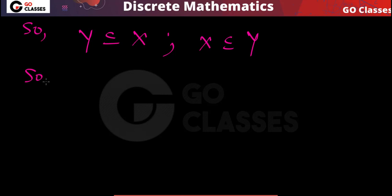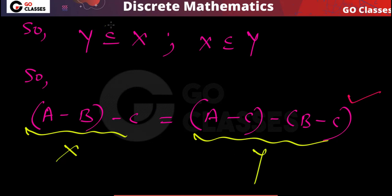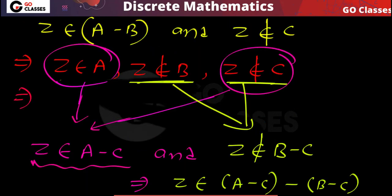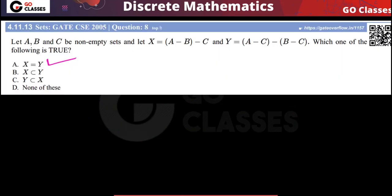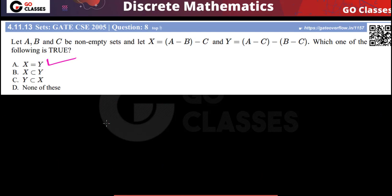From z belonging to A and z not belonging to B, we get z belongs to A minus B. Combined with z not belonging to C, we get z belongs to A minus B minus C, which is X. So Y is a subset of X. Since X is a subset of Y and Y is a subset of X, we conclude X equals Y. We have seen all three methods — Venn diagram, simplification, and analytical — and the answer is X equals Y.